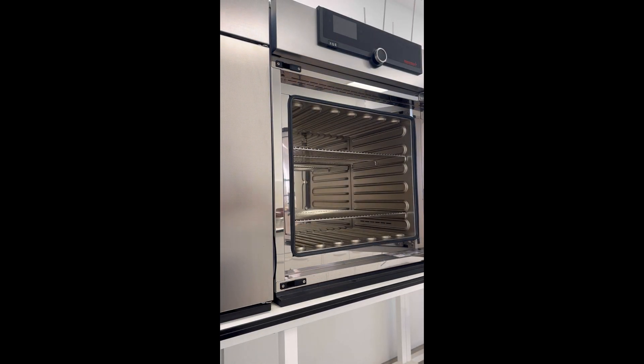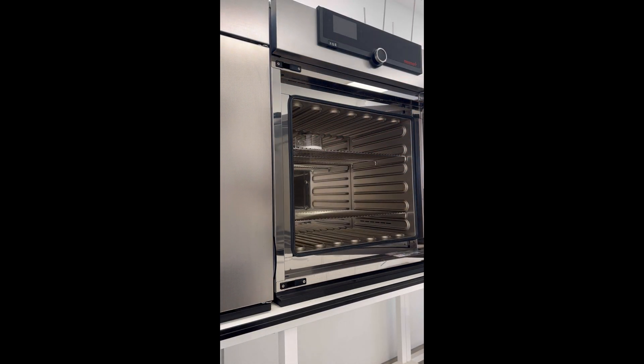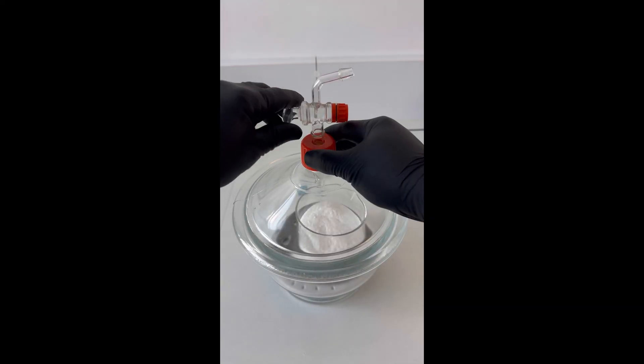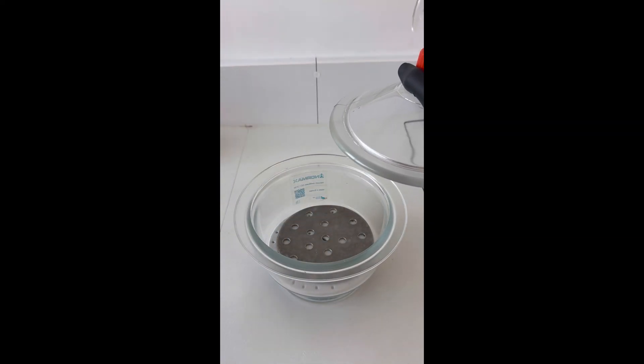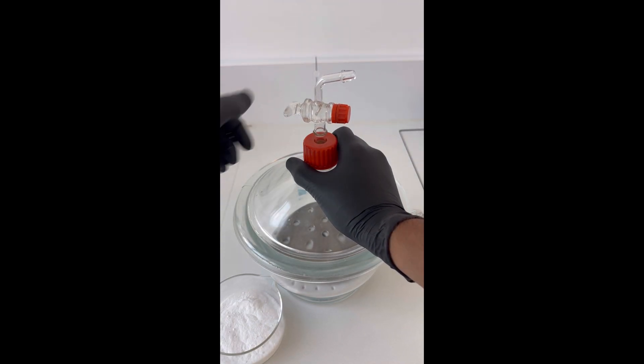We begin by drying the EDTA at 105 degrees Celsius for at least an hour. The powder is then cooled to room temperature in a desiccator to prevent absorbing moisture from the air.